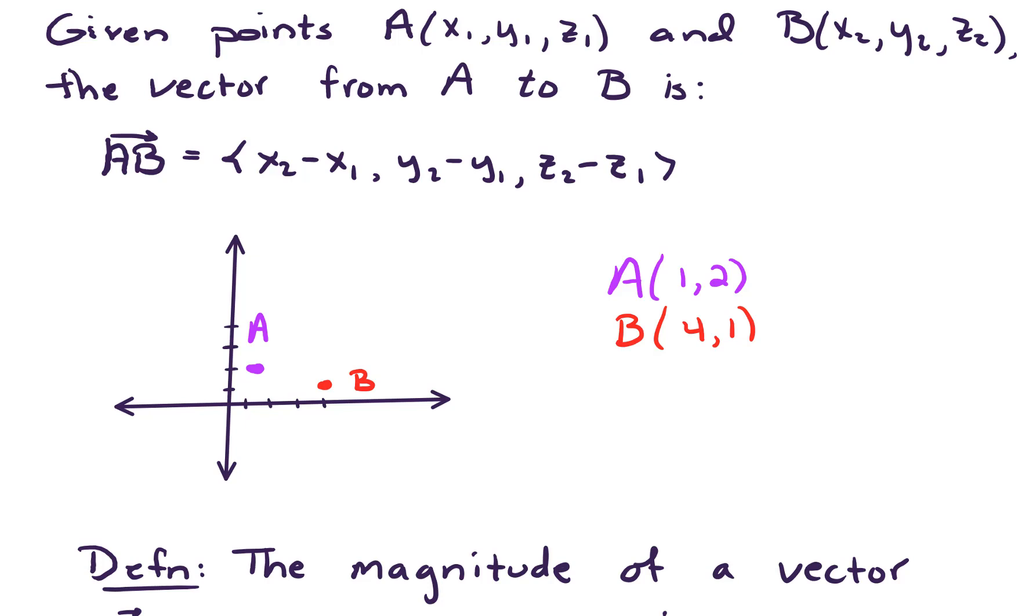Suppose A is the point over 1 up 2, and let's suppose B is the point over 4 up 1. And if we wanted to find the vector from A to B, we could draw that on our graph here. So that's the vector from A to B. To find that vector from A to B, that would just be first components we need to subtract, so that's 4 minus 1 in the first component. Second component, 1 minus 2 in the second component. And so that tells us that vector from A to B is 3, negative 1. Now if we were to draw that on our graph, that would say over 3 and down 1, that vector would look like the following.